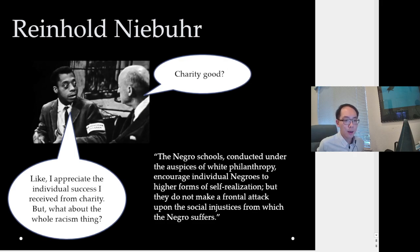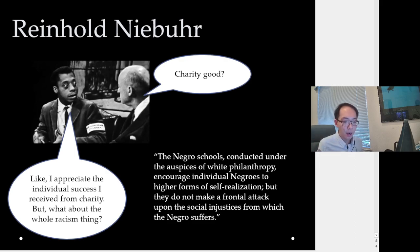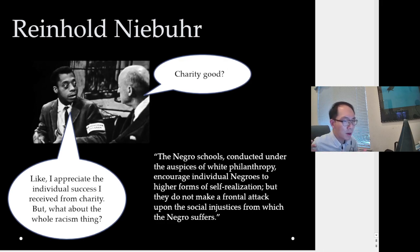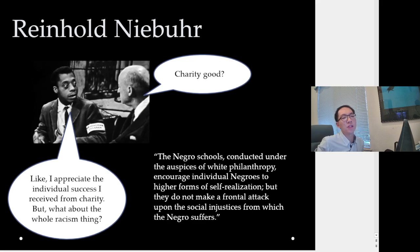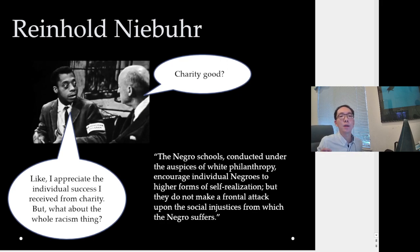Reinhold Niebuhr received charity but also criticizes it. He writes: 'The Negro schools conducted under the auspices of white philanthropy encourage individual Negroes to higher forms of self-realization, but they do not make a frontal attack upon the social injustices from which the Negro suffers.' Niebuhr's point: charity benefits some individuals, but it becomes an excuse to ignore the bigger systemic problem — the racism that still exists for those who didn't receive charity. Charity sometimes only tackles a little bit and becomes a scapegoat.